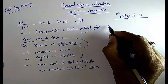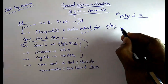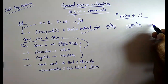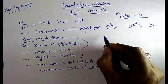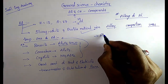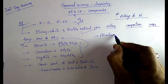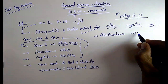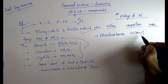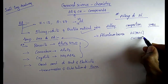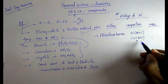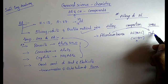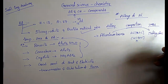The important alloys of aluminium with their composition and uses are very important for exams. The first alloy is aluminium bronze. In aluminium bronze, the composition is aluminium 10% and copper 90%.